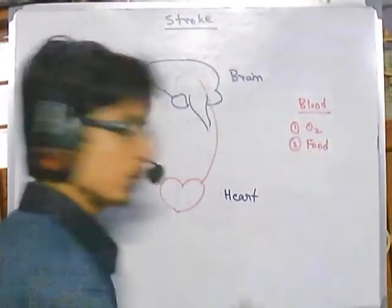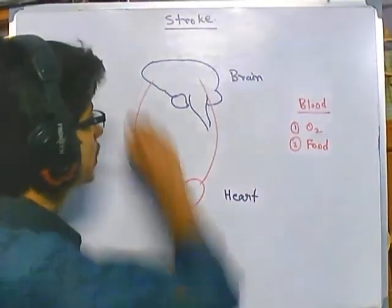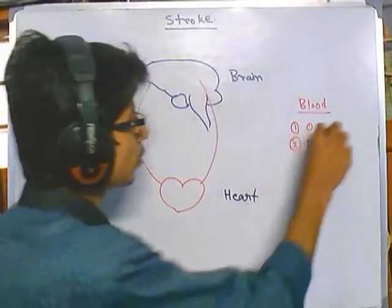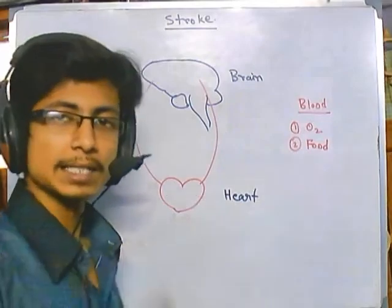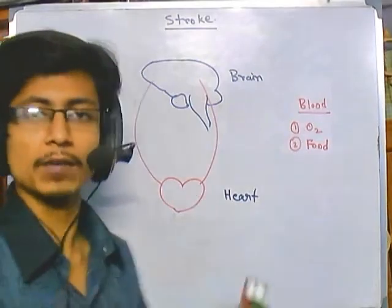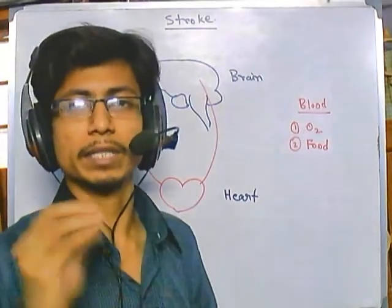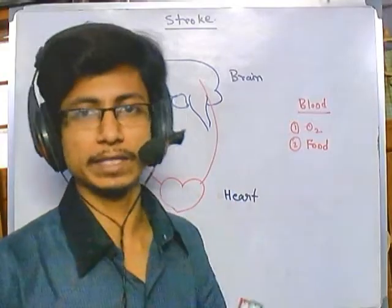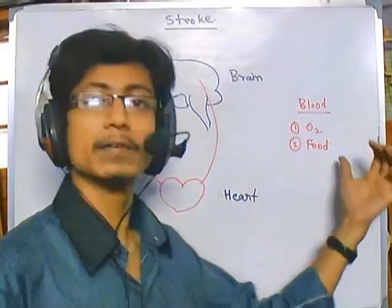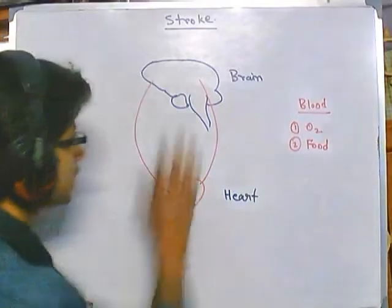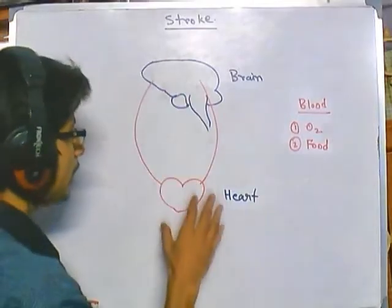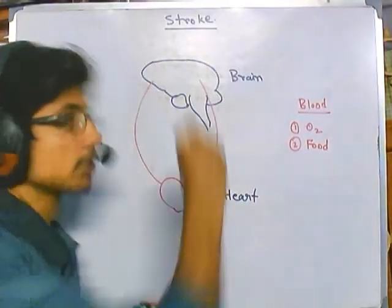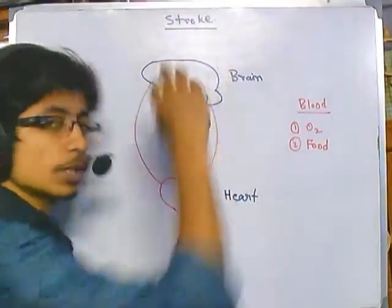If somewhere in our body some cells don't receive oxygen or food, as a result of that lack of oxygen and food, after some time they will die. All living cells must require oxygen and food. We will be focusing only on the cells present in the brain, because that's what stroke is all about.